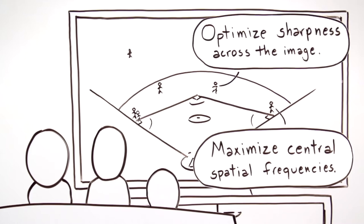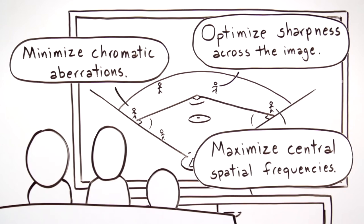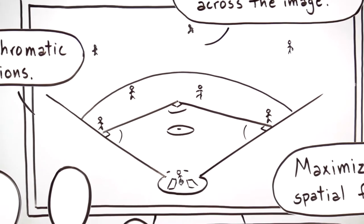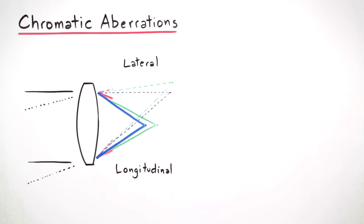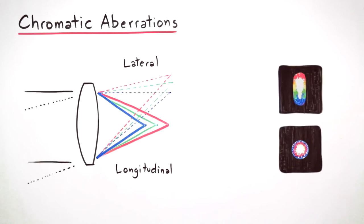It's also critically important to minimize chromatic aberrations. Lateral and longitudinal chromatic aberrations occur when different color light waves react differently as they pass through the lens. The resulting color misregistration and color fringing also make images appear less sharp.